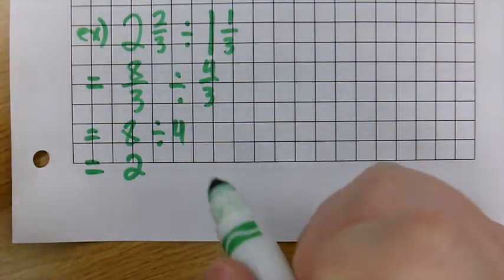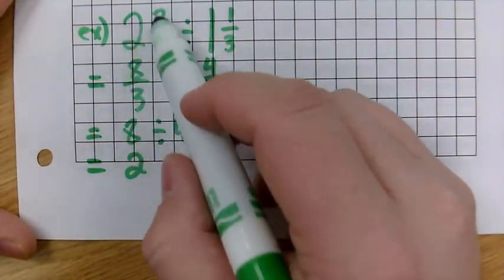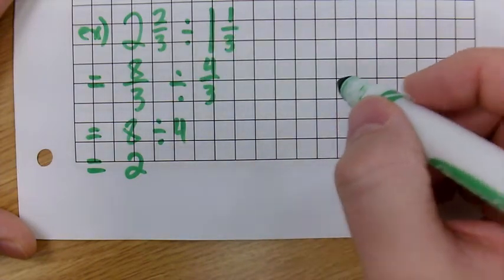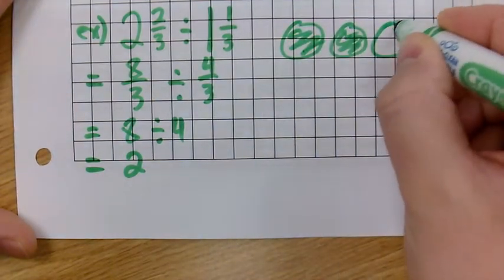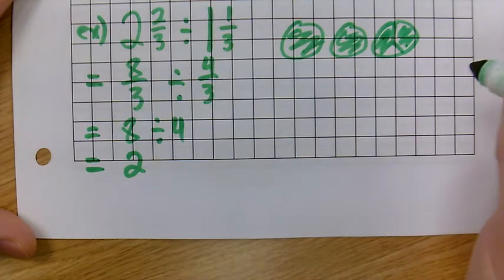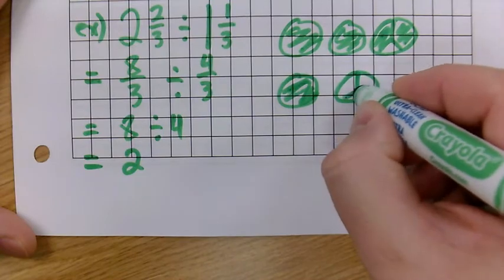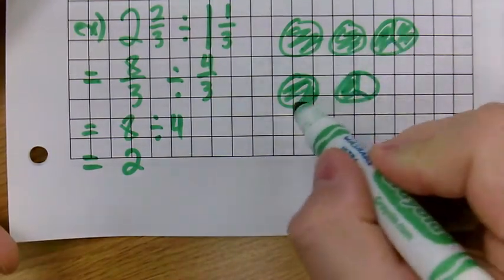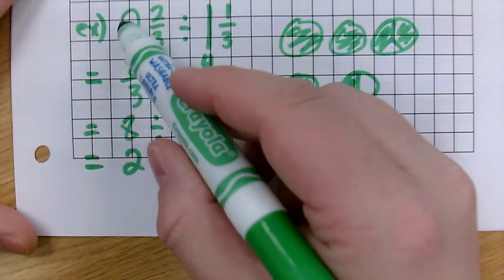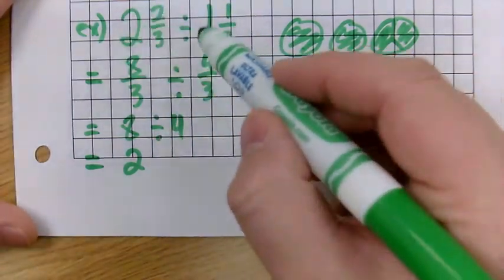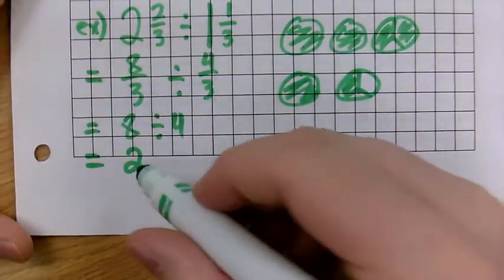Now, notice something. If we look at this fraction compared to this fraction, notice that this is 2 times as big as this fraction. If we have 2 circles and 2 thirds of a circle, that is twice as big as 1 circle and 1 third of that circle, right? This is twice as big, and so notice that the answer here is 2. Why? Because this is twice as big as this. If the first, your dividend, is twice as big as your divisor, it will be 2. If it was 3 times bigger, it would be 3, and so forth.